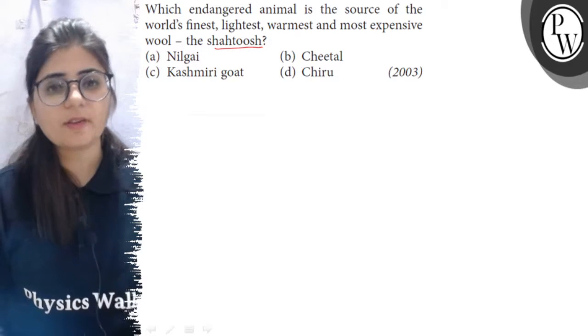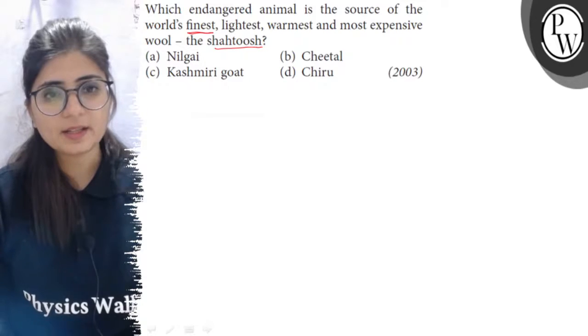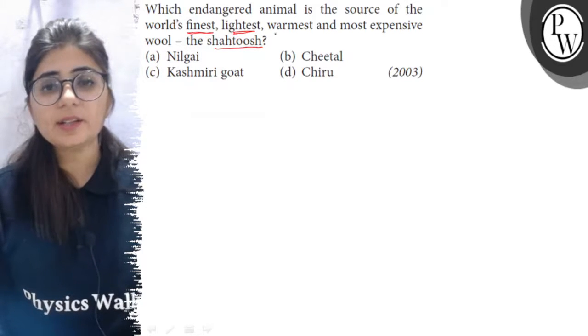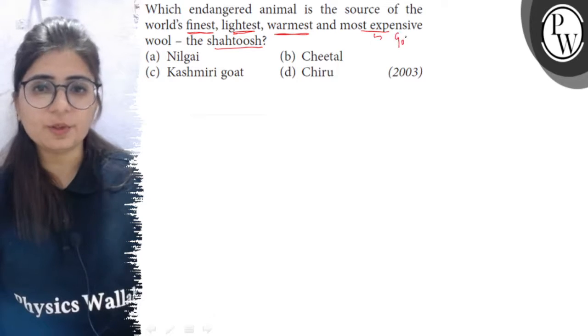Shahatus is a variety of wool that is very fine, very light in weight, very warm, and more valuable than gold.